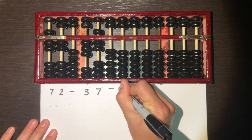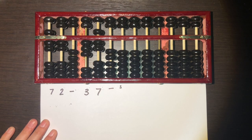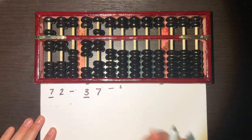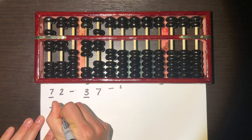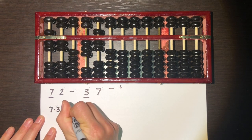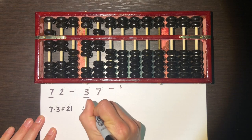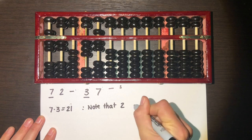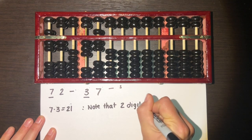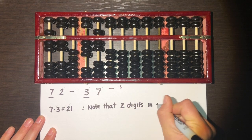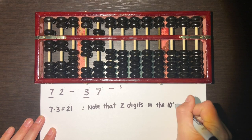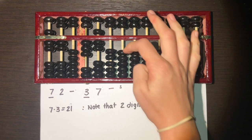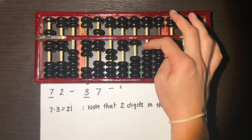We leave another blank spot, and this column will be our starting spot. We take the first digit of each number: seven times three equals 21. Noting that we have two digits in the result, we go to our starting spot and set 21 — one, two, and one.